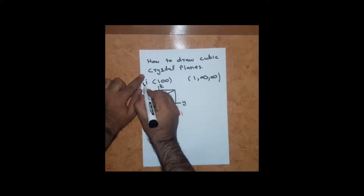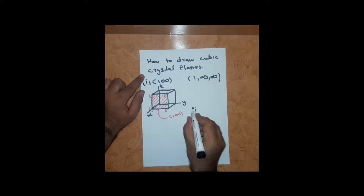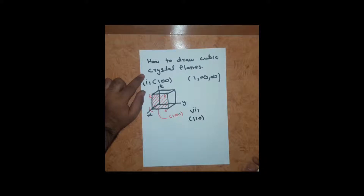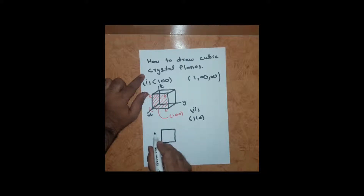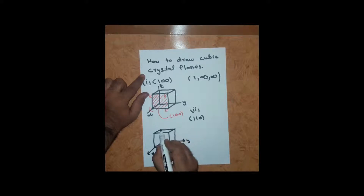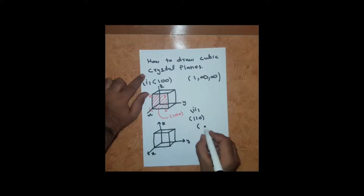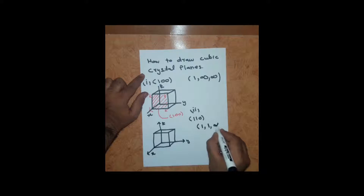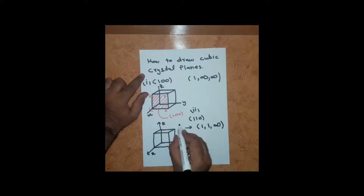Now let's look at the second case: draw the plane (110). Once again we take a unit cube. This is your y-axis, x-axis, and z-axis. If we take the reciprocals of (1 1 0) we get 1, 1, and infinity — these are the intercepts.